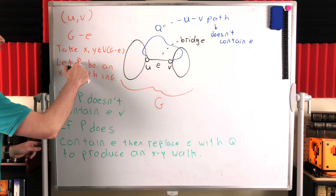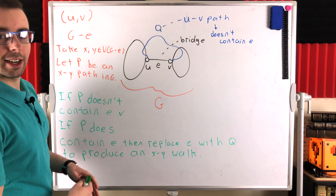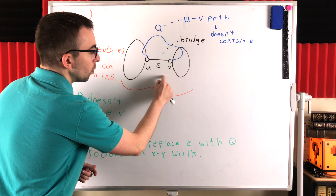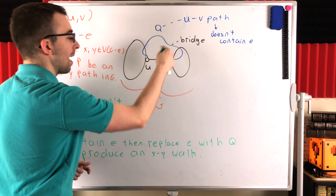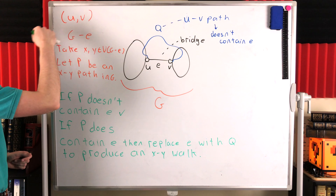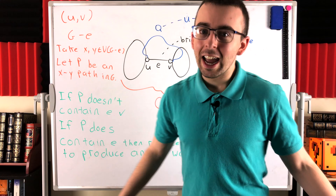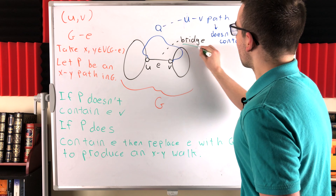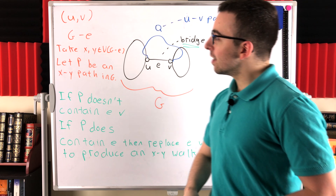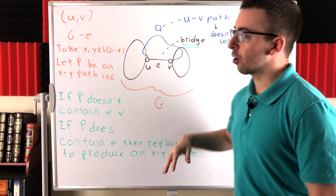Either way, X and Y are connected. If P doesn't contain E, it still exists in G minus E, so X and Y are connected. If P does contain E, we replace E with Q to produce an XY walk, so X and Y are still connected. Thus every pair of vertices in G minus E is connected, so G minus E is connected, so E is not a bridge — a contradiction, because E was defined to be a bridge. Therefore, if an edge is a bridge, then there is a unique path connecting its end vertices, which is just traveling across the bridge.